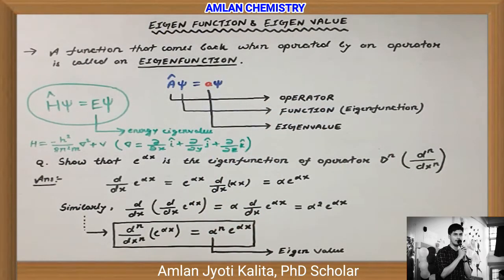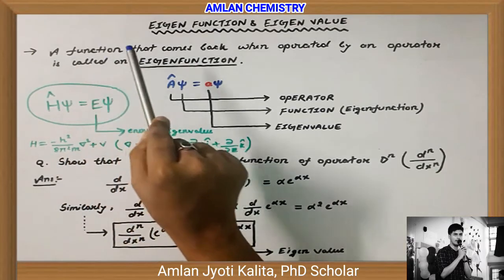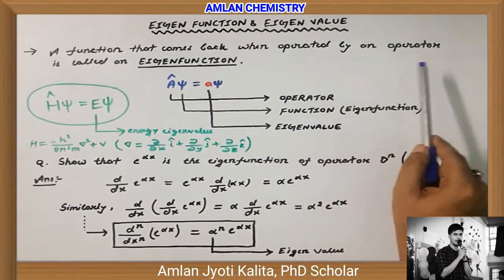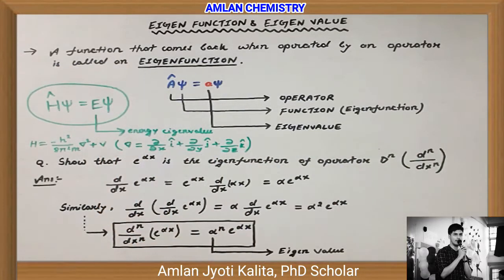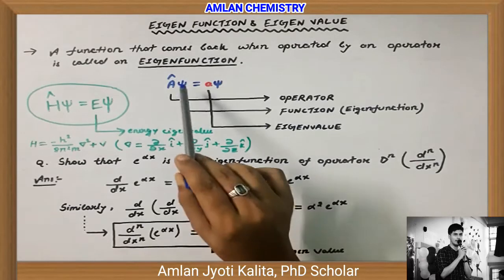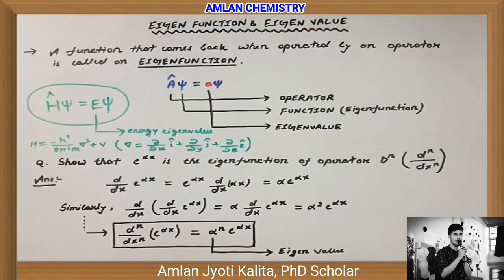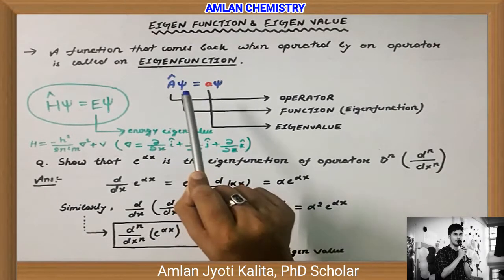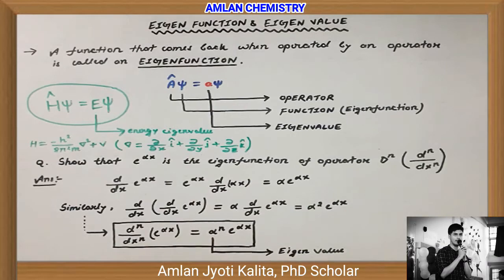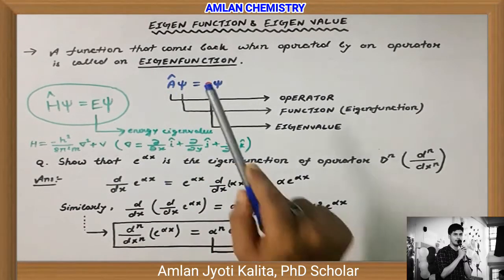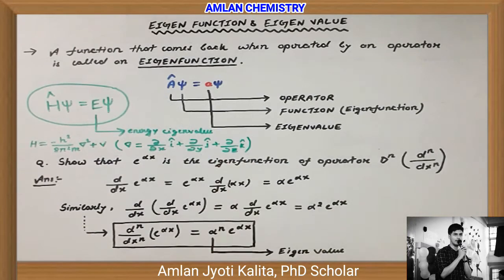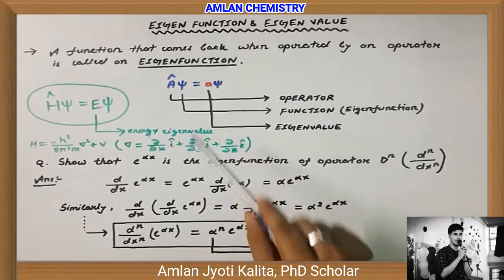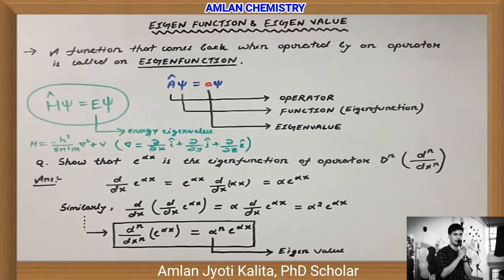By definition, a function that comes back when operated upon by an operator is called an eigenfunction. Maan lijiye koi bhi ek function hai, aur us function ke upar ek operator operate karne ke baad agar haamko same function mile multiplied by a particular value, toh us function ko hum log bolenge eigenfunction, aur jo value milti hai usse hum log bolenge eigenvalue.